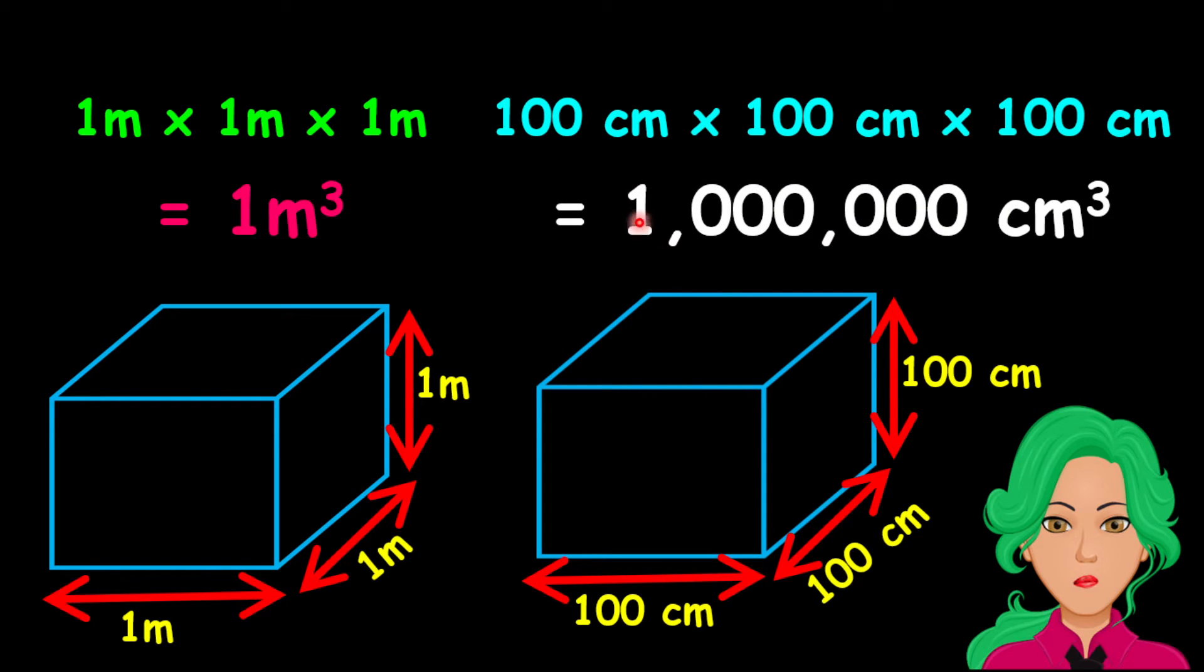Now, to find the volume, we can say that 100 centimeters multiplied by 100 centimeters multiplied by 100 centimeters. This gives us a volume of 1 million centimeters cube.